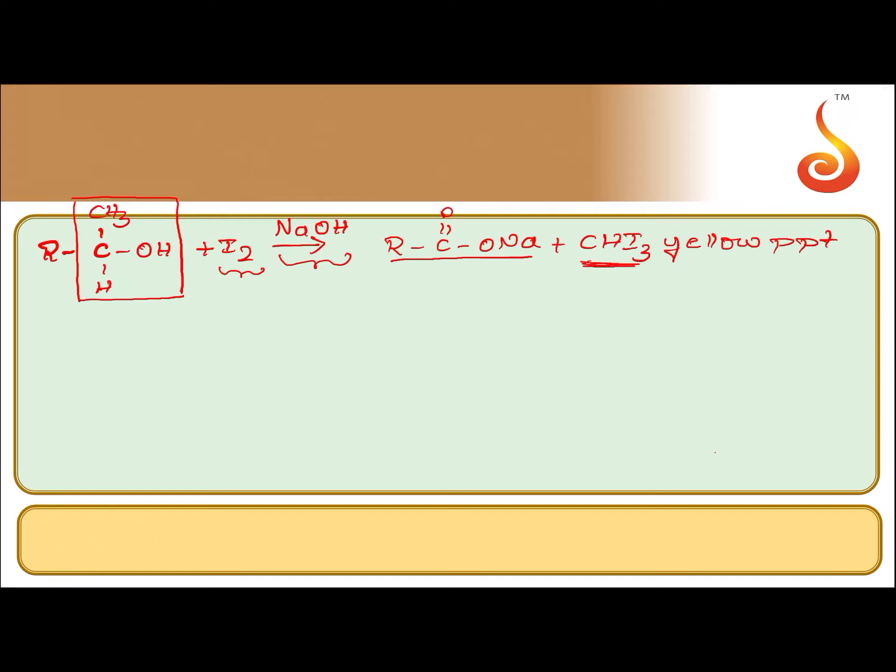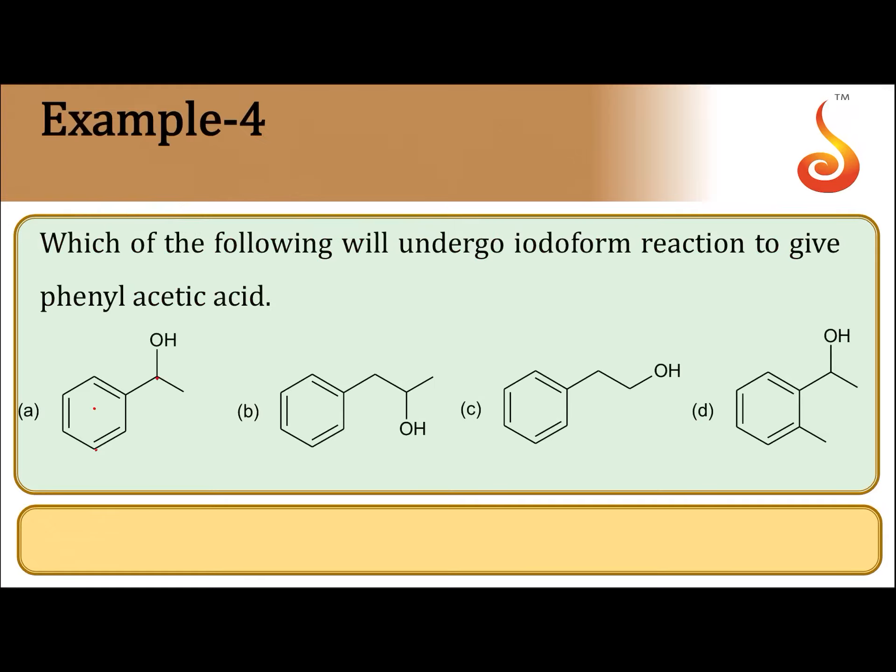Alcohols having the CH3CHOH group, when treated with iodine and sodium hydroxide, form iodoform and the sodium salt of carboxylic acid. The sodium salt will have one carbon atom less than the alcohol reacting with iodine and sodium hydroxide.